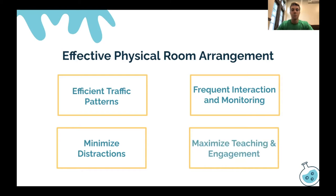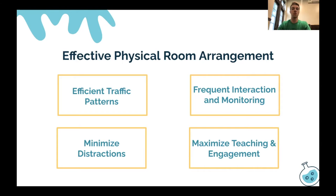The last consideration is maximizing teaching and engagement — promoting student social and emotional learning through classroom arrangement. Seating arrangements should match the instructional format. Changing seats and being flexible keeps students actively engaged; studies have shown just that. We also need to make sure all students have a clear line of sight.